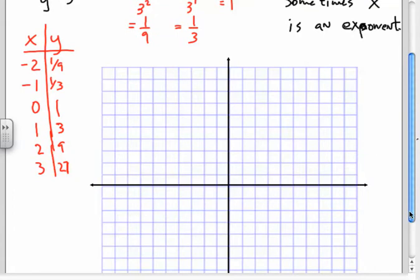So at negative 2, y is 1 ninth, OK? So that, I mean, that's right here. That's kind of tiny, all right? When x is negative 1, y is 1 third, OK? 1 third.